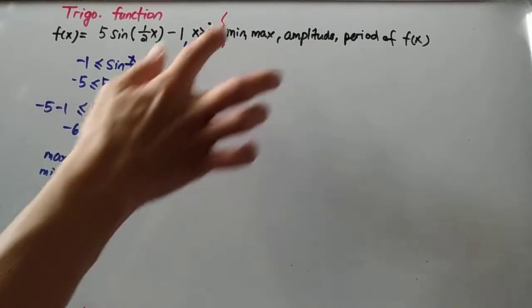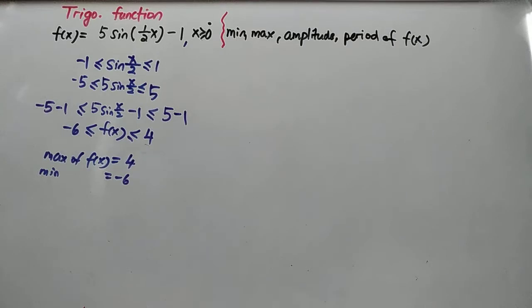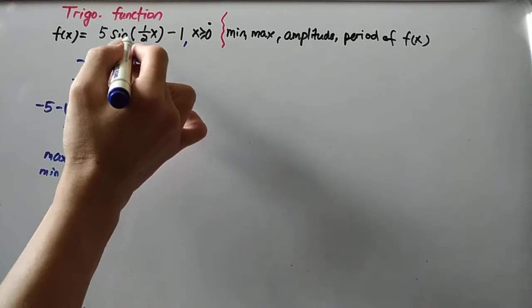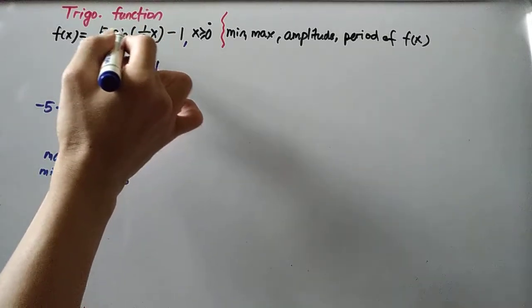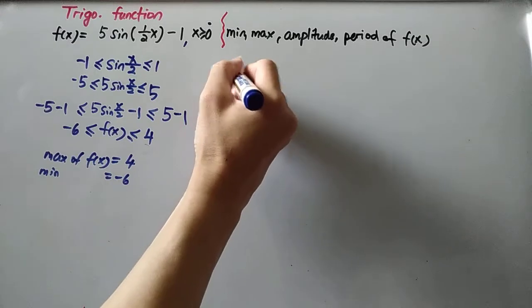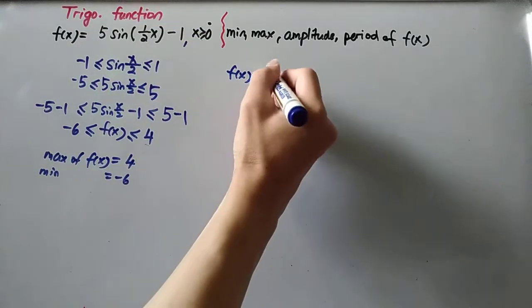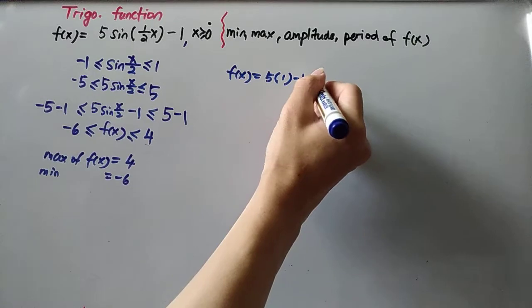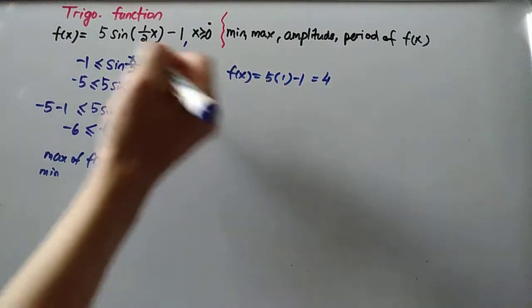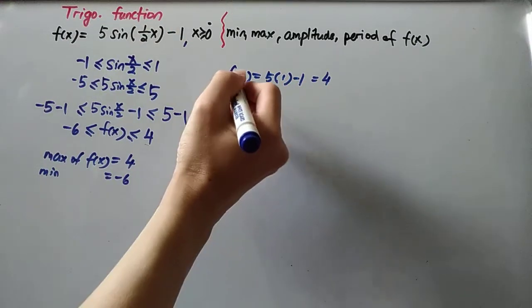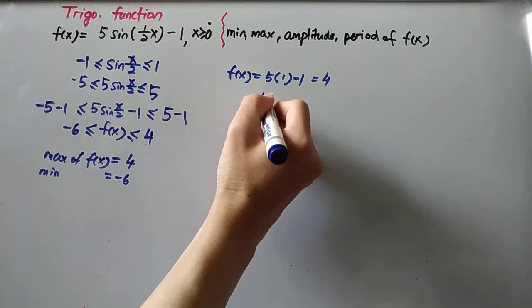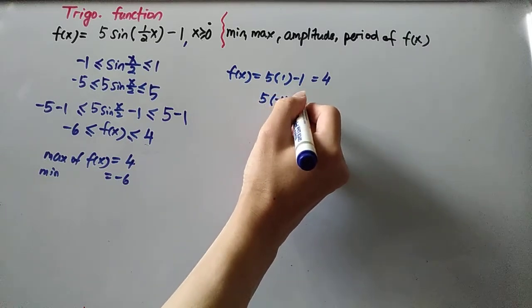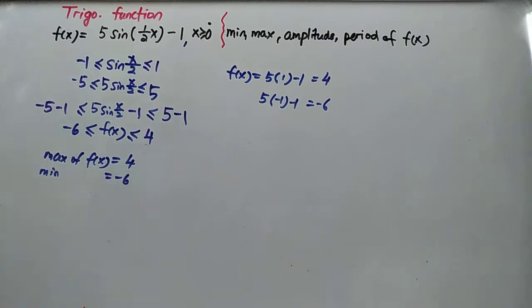Okay, so we solved part one. Of course you can do it the other way. The other way is we consider the maximum value for sine is 1, so the f(x) maximum will be 5 times 1 minus 1, so you get 4. Then sine equals negative 1 for the minimum, so you get negative 6. You want to do it this way also can.